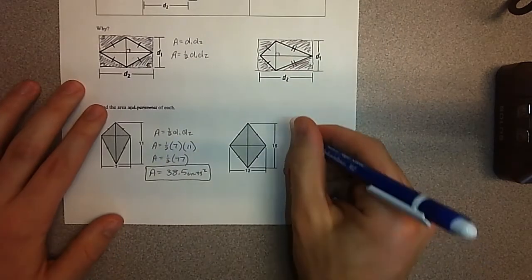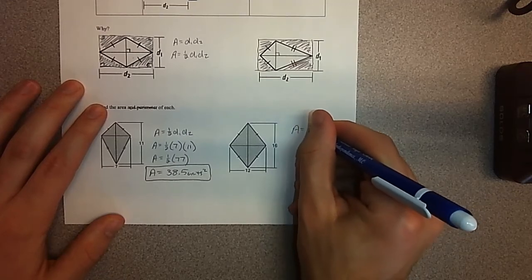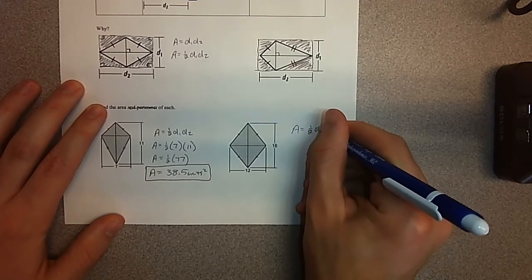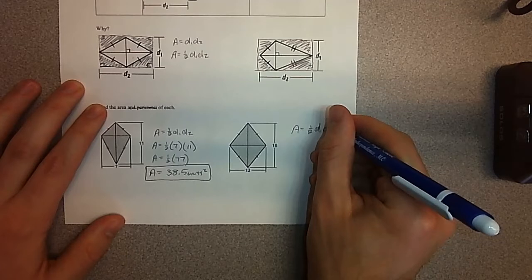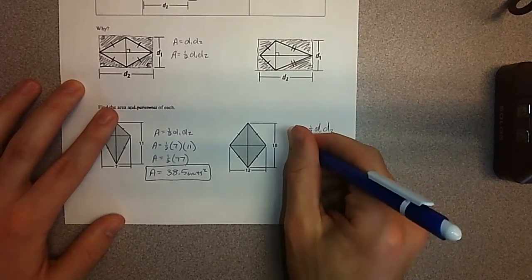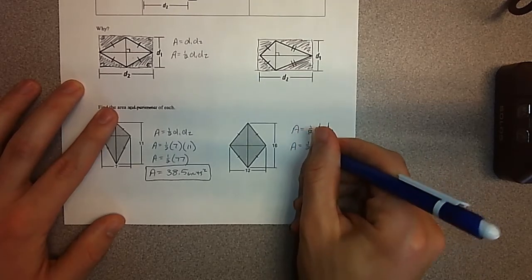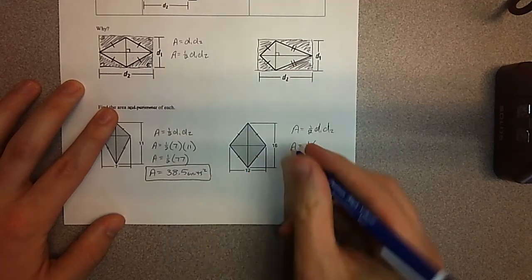And just to show you, with rhombus, it would work the same way. Area equals one-half times diagonal one times diagonal two. Got a little scribble right there. Ugly handwriting. That's okay. It'll get the job done. Area equals one-half times diagonal one. This time, I'm seeing 12. Diagonal two is 16.